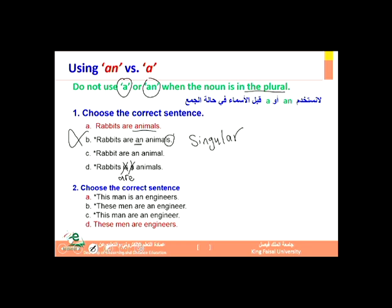Similarly: 'This man is an engineer' is correct because 'man' is singular. 'These men are an engineer' is wrong — we have a plural subject. The correct sentence is 'These men are engineers' — no article. When the noun is plural, do not use 'a' or 'an.' You cannot say 'these men are a engineers' or 'an engineers' because we have a plural noun.